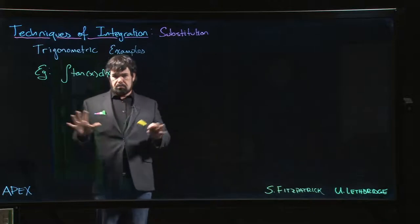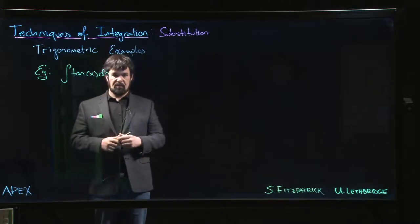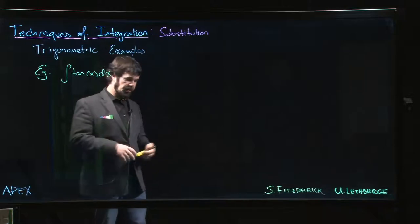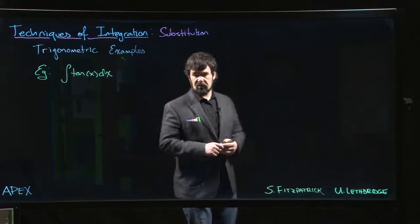So we know how to deal with sine and cosine, right? Because those ones are pretty straightforward. Antiderivative for sine is negative cos. Antiderivative for cosine is sine.